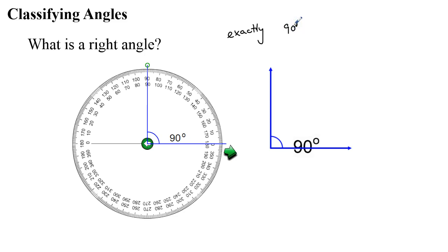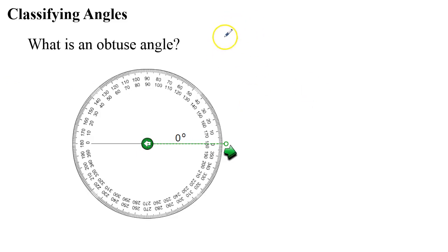Now what happens when we go beyond 90 degrees? Well, that brings us to what is called an obtuse angle. An obtuse angle is between 90 degrees and 180 degrees.